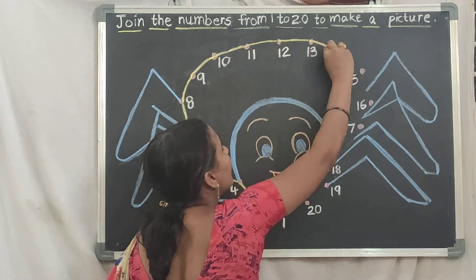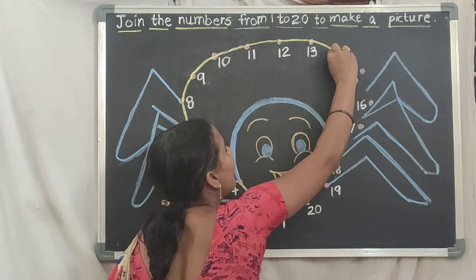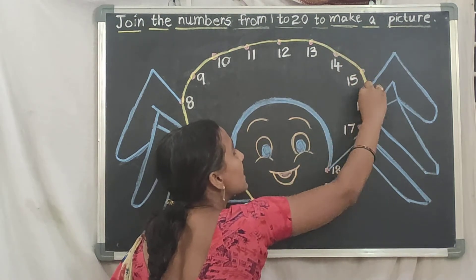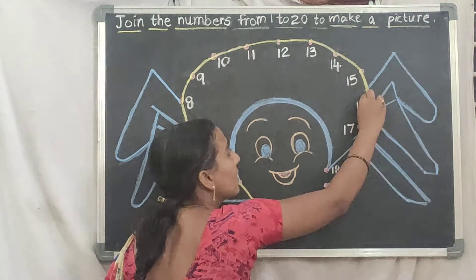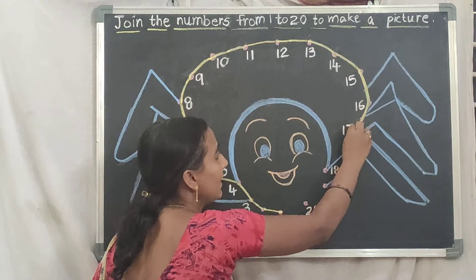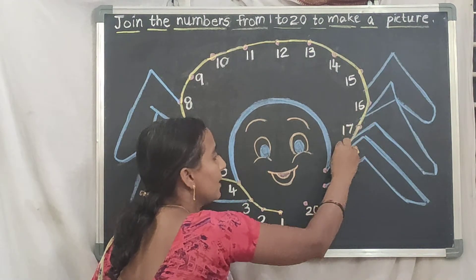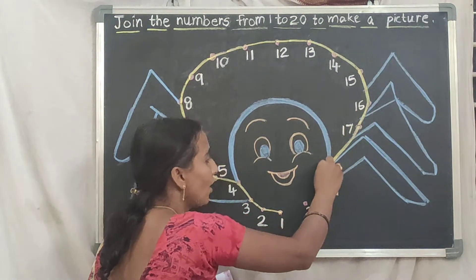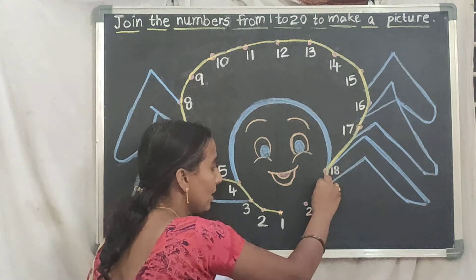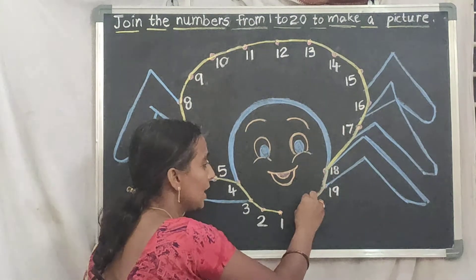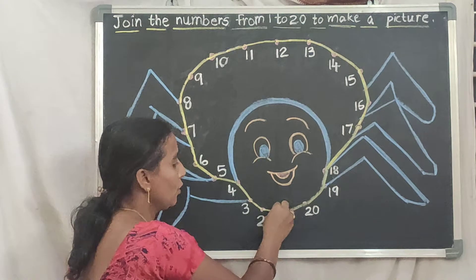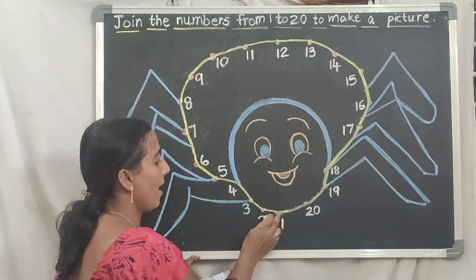Thirteen dot, fourteen dot, fifteen dot, sixteen dot, seventeen dot, join the eighteen dot, then nineteen dot, twenty dot.